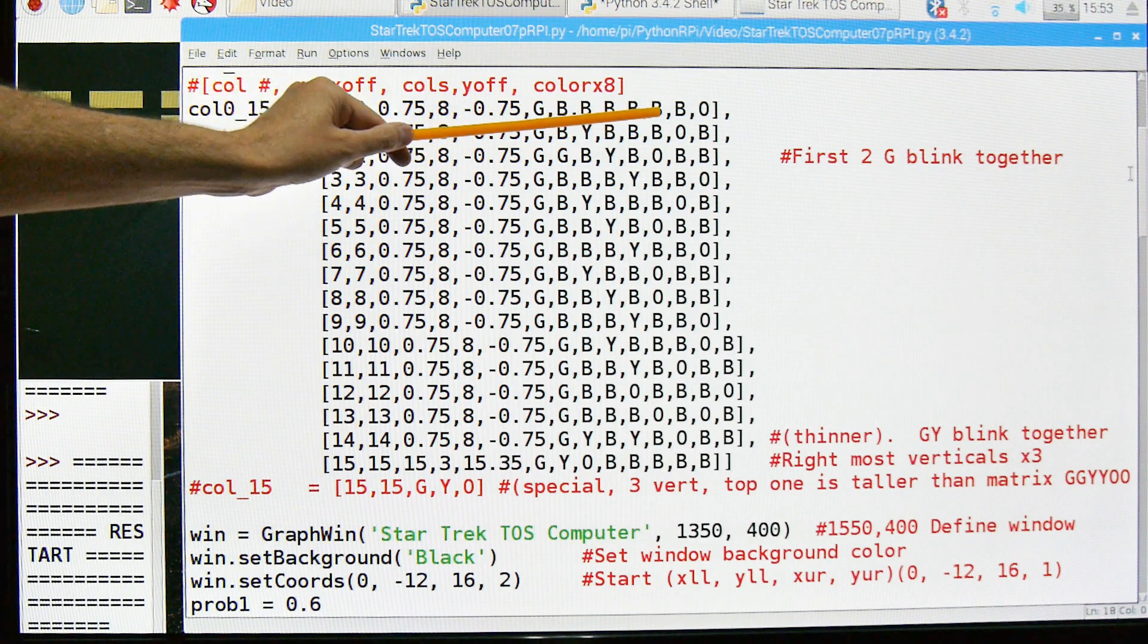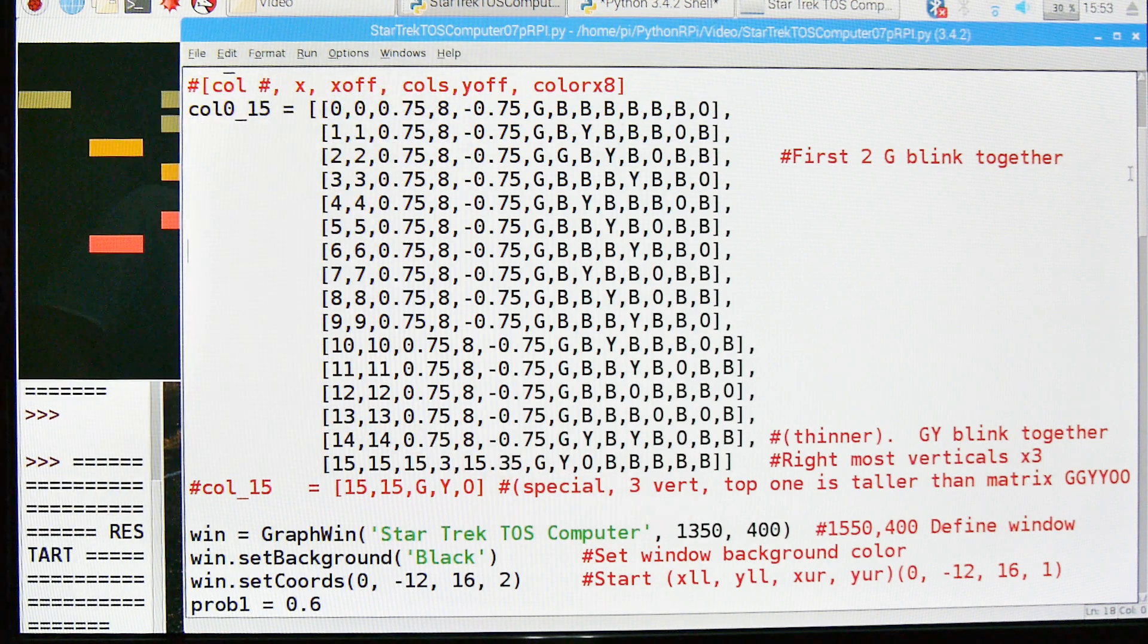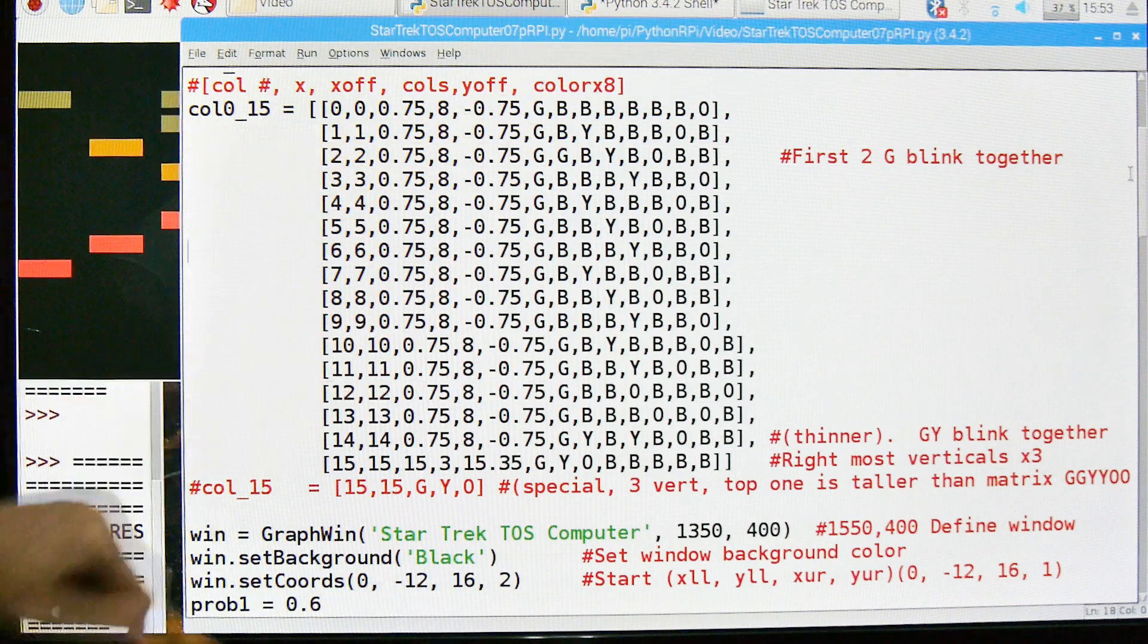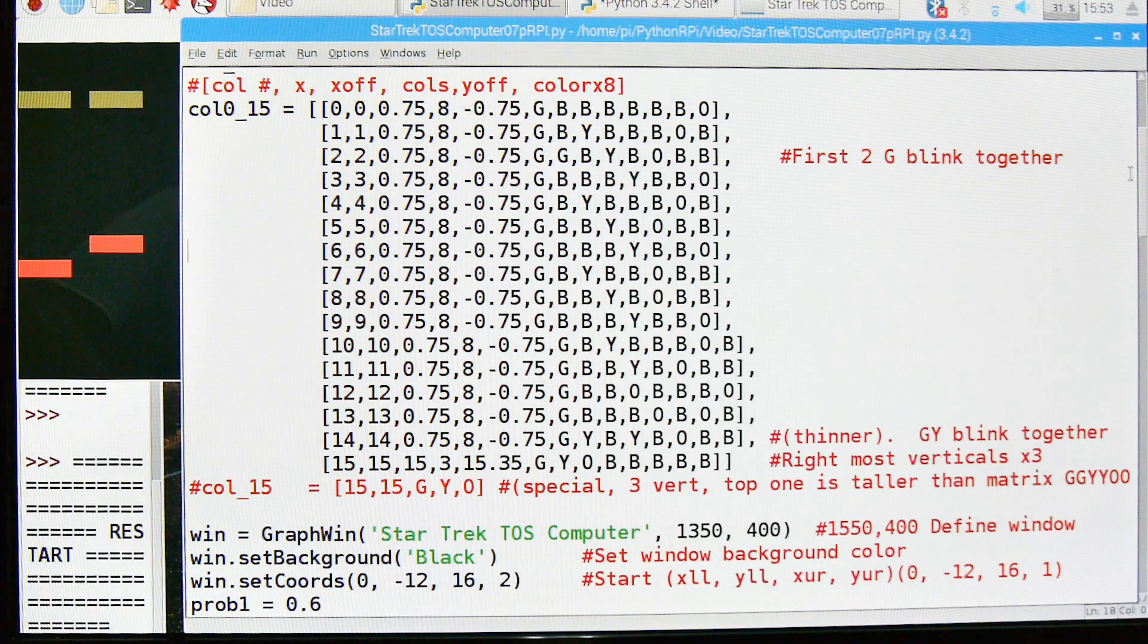For example, green, black, black, black, black, black, black, and orange. And then it goes through. And this is the pattern that's in the original series on Mr. Spock's readout. So I've spent hours studying his panel to get those.